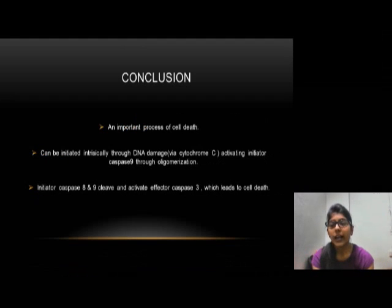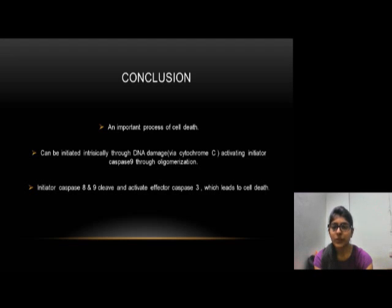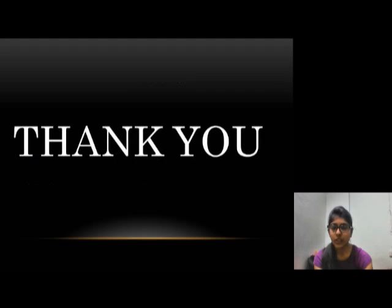In conclusion, apoptosis is an important process of cell death and can be initiated intrinsically through DNA damage via cytochrome C, activating initiator Caspase-9 through oligomerization. In addition, initiator Caspase-9 cleaves and activates effector Caspase-3, which leads to cell death. Thank you for watching.